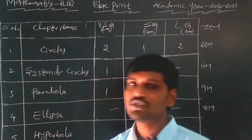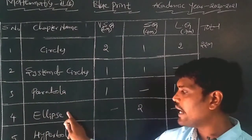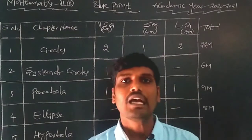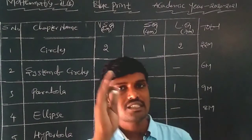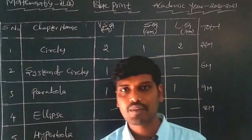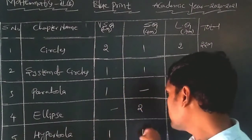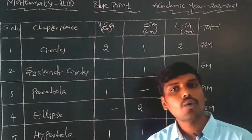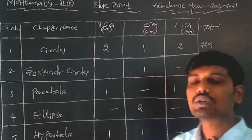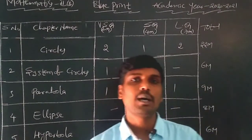The fifth chapter is Hyperbola, which belongs to the Conic Sections group along with Parabola and Ellipse. In this Hyperbola chapter: one 2-mark question and one 4-mark question are coming — no 7-mark questions — making a total of 6 marks in the IP examination.